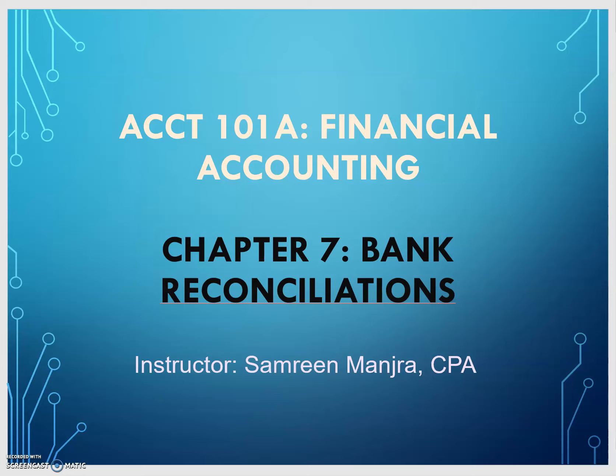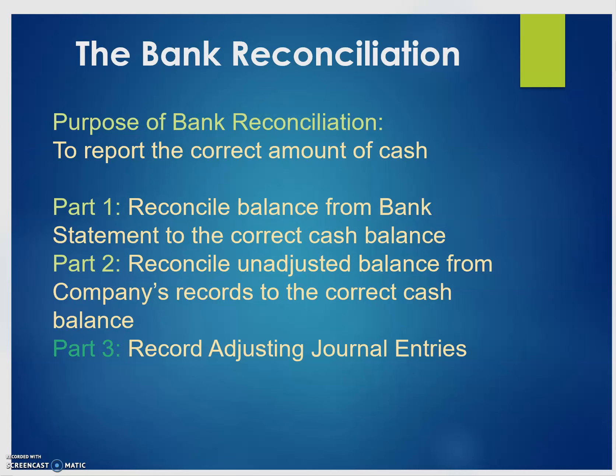In this video we will discuss bank reconciliations, which are covered in chapter 7. The purpose of the bank reconciliation is to report the correct amount of cash on the balance sheet. This is split into three parts: part one is to reconcile the balance from the bank statement to the correct cash balance; part two is to take the unadjusted balance from the company's records and reconcile that to the same correct cash balance.